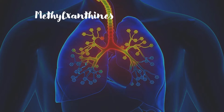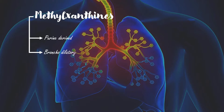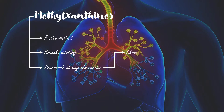Methylxanthines are a purine-derived group of pharmacologic agents that have clinical use because of their bronchodilatory and stimulatory effects. Methylxanthines are used for the treatment of reversible airway obstruction diseases such as chronic bronchitis, emphysema, and asthma.